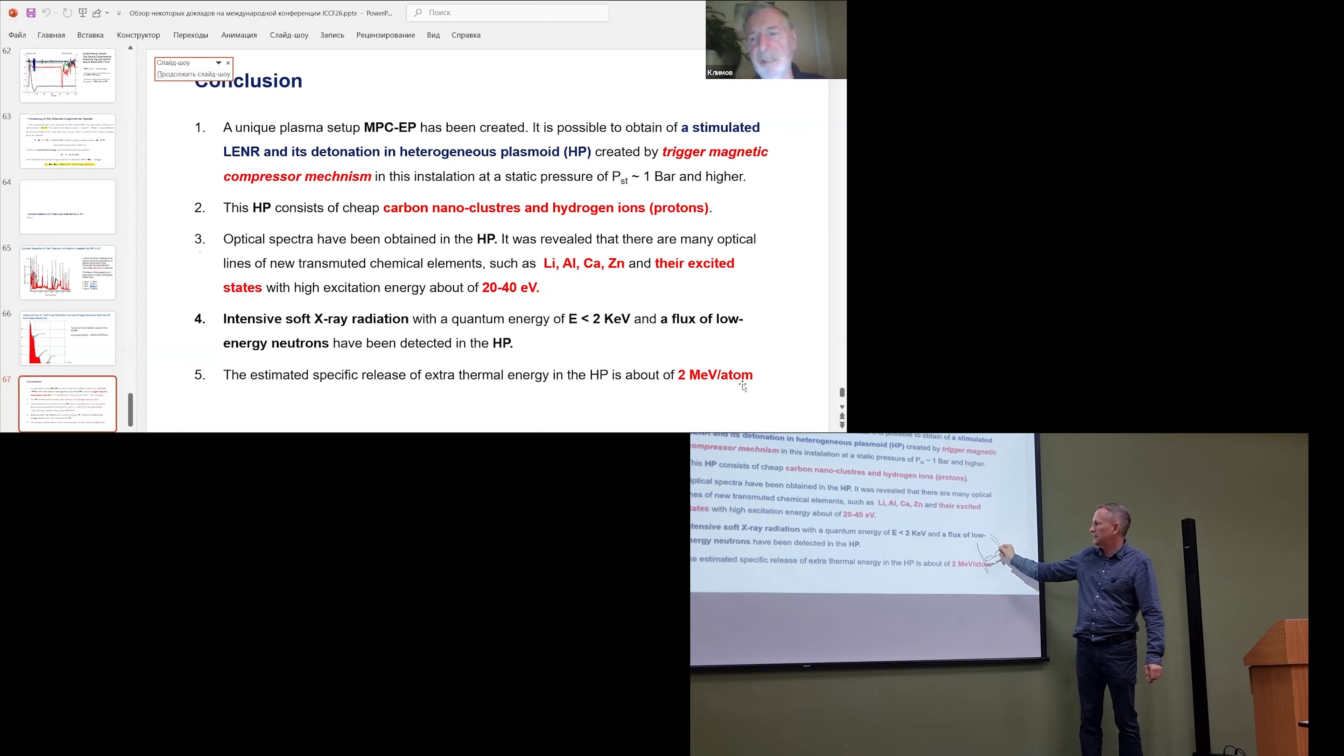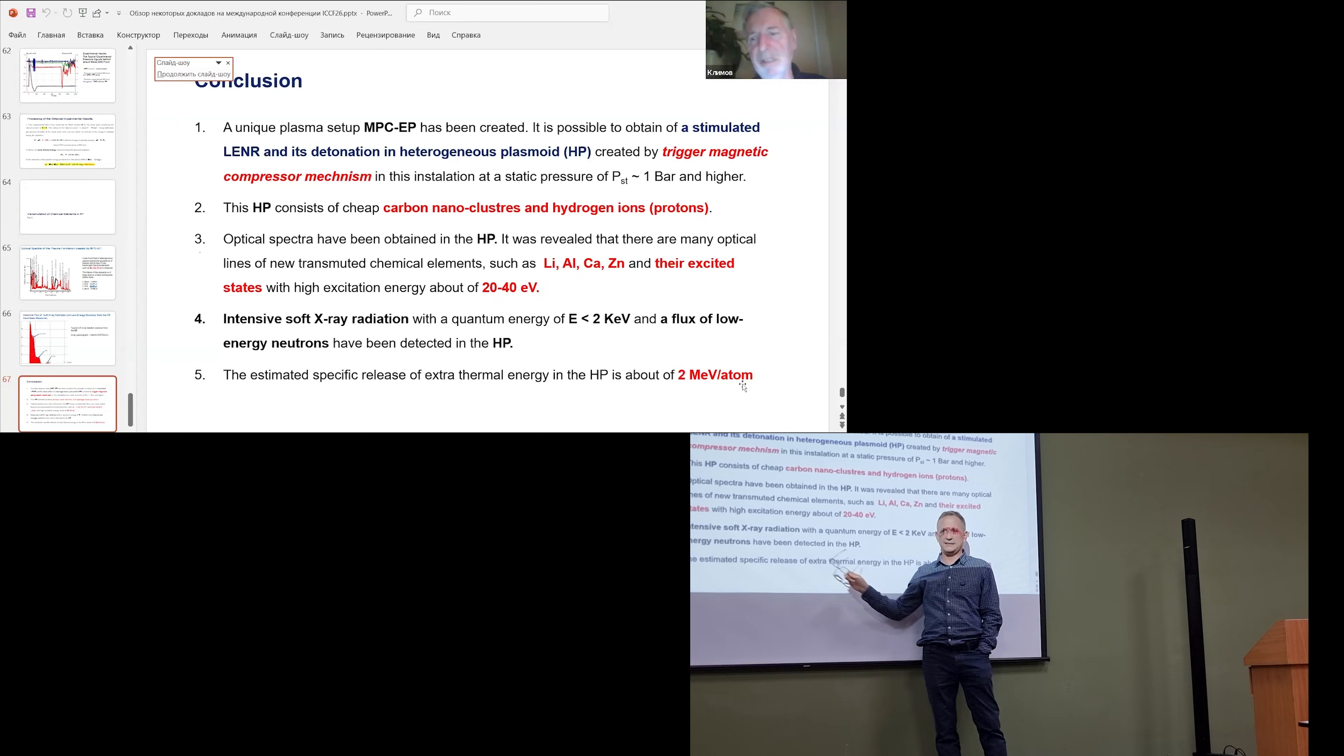And look, they've got this. At less than two kilo electron volts and a flux of low energy neutrons have been detected. A flux of low energy neutrons has been detected. So, they are producing neutrons.